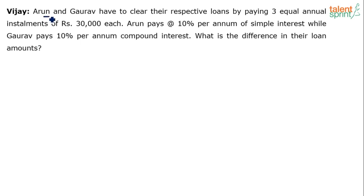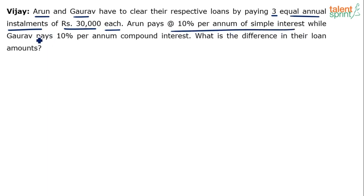This is an interesting one — two guys, Arun and Gaurav, have taken some loans and both are going to clear their loans by paying three equal annual installments of rupees 30,000 each. Arun is paying at 10% per annum simple interest while Gaurav is paying at 10% per annum compound interest. Though the installments are equal at 30,000 each, the calculation to arrive at that 30,000 is different.